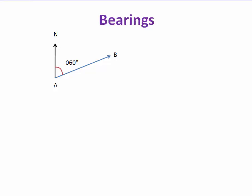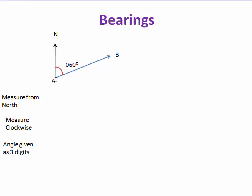Hi and welcome to this video on bearings — GCSE level maths made easy. A bearing is an angle measured from north. So when we're measuring from point A to point B, we measure from north: we draw a north line and measure from that clockwise.